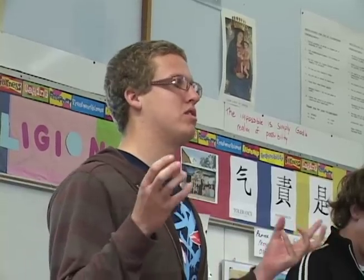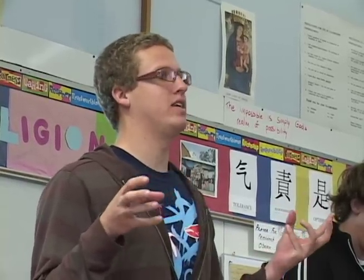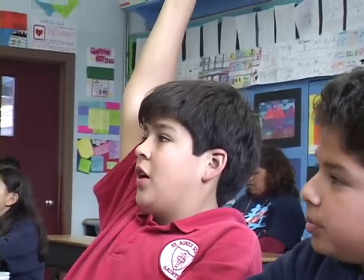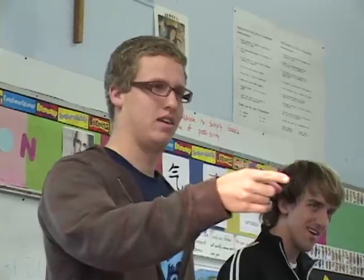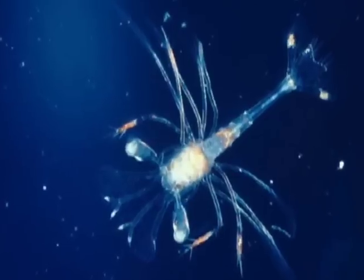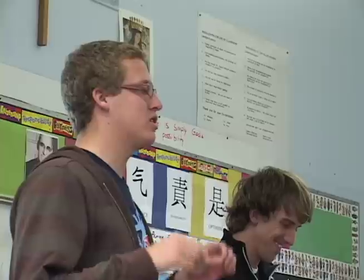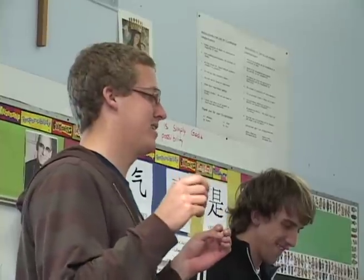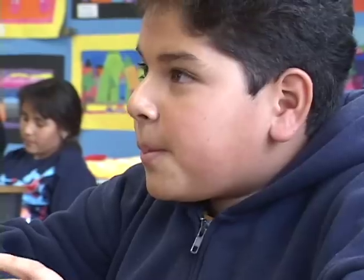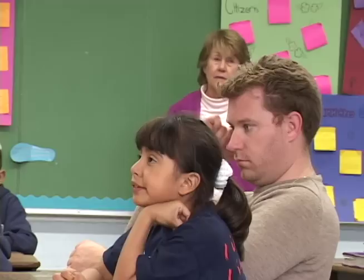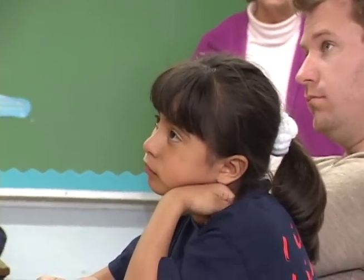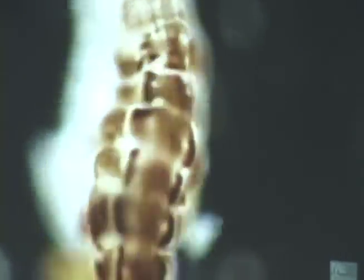Do you guys know what's an animal that's really, really tiny that you think might use viscosity? A plankton — that's right. Can you guys think of anything smaller than a plankton? Think in terms of really small things like germs. Germs are bacteria. Sometimes those things can be really small and live in fluids.